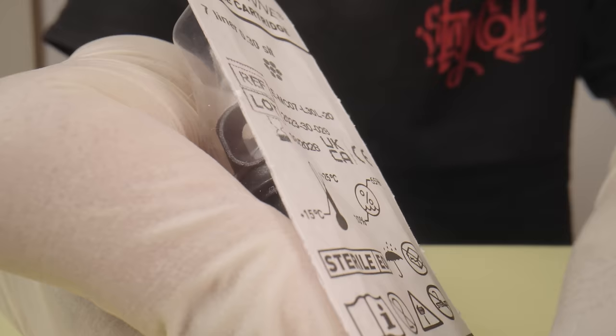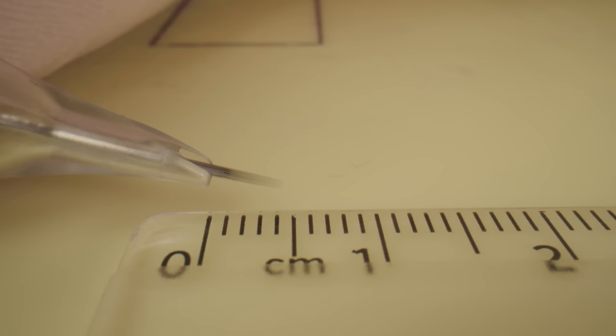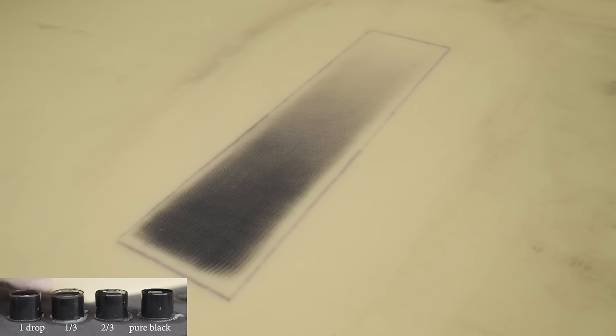For blending the shading, I use a seven round liner with six needles arranged in a circle and one in the center. I set this needle to protrude about four millimeters from the module. I deliberately didn't extend the shading with the magnum all the way to the edges, as it can be challenging for beginners to work precisely at the edges.